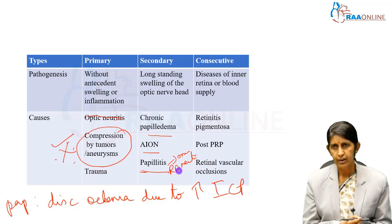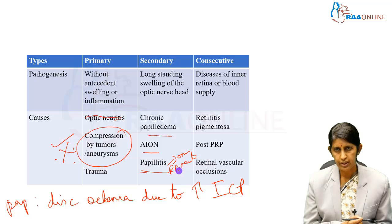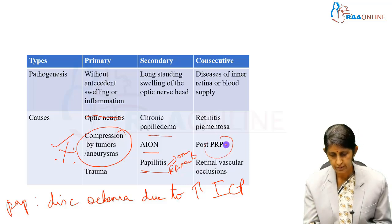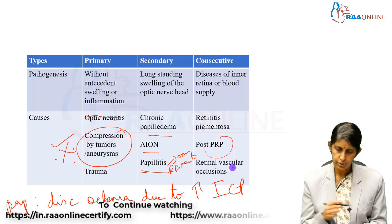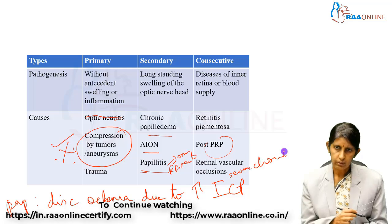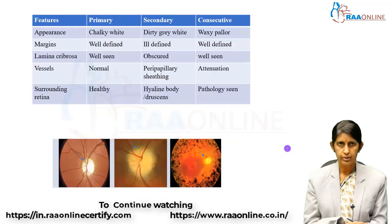Consecutive optic atrophy results from diseases of the inner retina or its blood supply. Common causes include retinitis pigmentosa, extensive pan-retinal photocoagulation, retinal vascular occlusions, and severe choroiditis. All of these can cause consecutive optic atrophy.